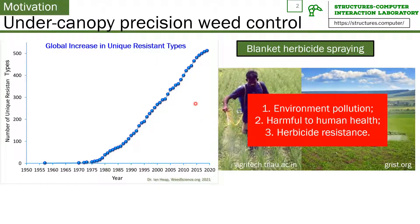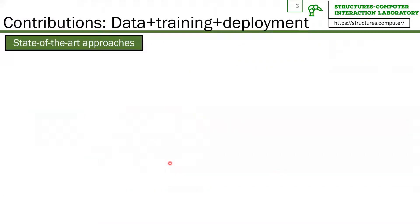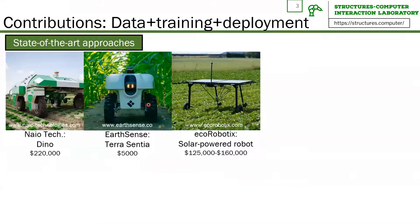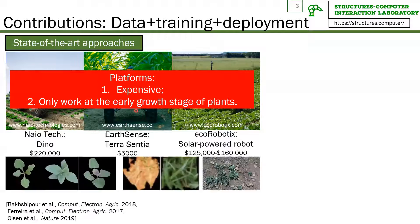So, robots for precision weed control — which means spraying the correct herbicides to the corresponding weeds — are urgently needed. Most state-of-the-art agriculture robots are giant tractors. A lot of them are expensive and use region-based methods for weed detection, which means they will encounter region occlusion as plants grow taller and denser. In addition, region-based algorithms must be trained on datasets, but there are few published crop field datasets from realistic fields.